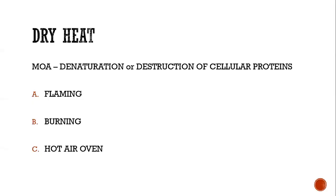Dry heat sterilization. The mode of action is denaturation or destruction of cellular proteins. In this method, dry heat is used for sterilizing different materials. Heated air or fire is used in this process. As compared to moist heat sterilization, the temperature is higher. It is further of three types: flaming, burning, and hot air oven.